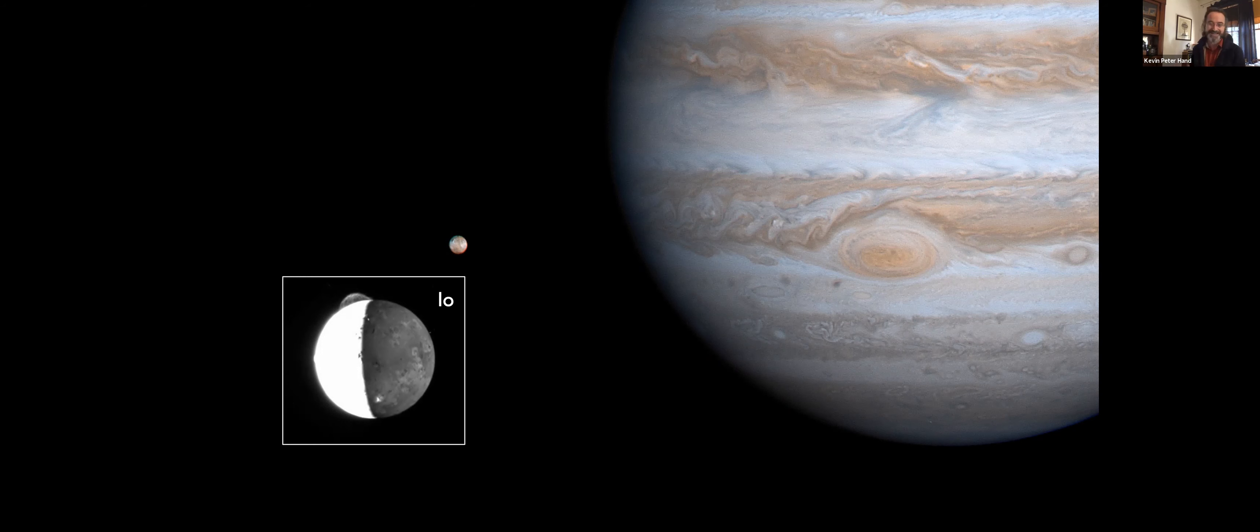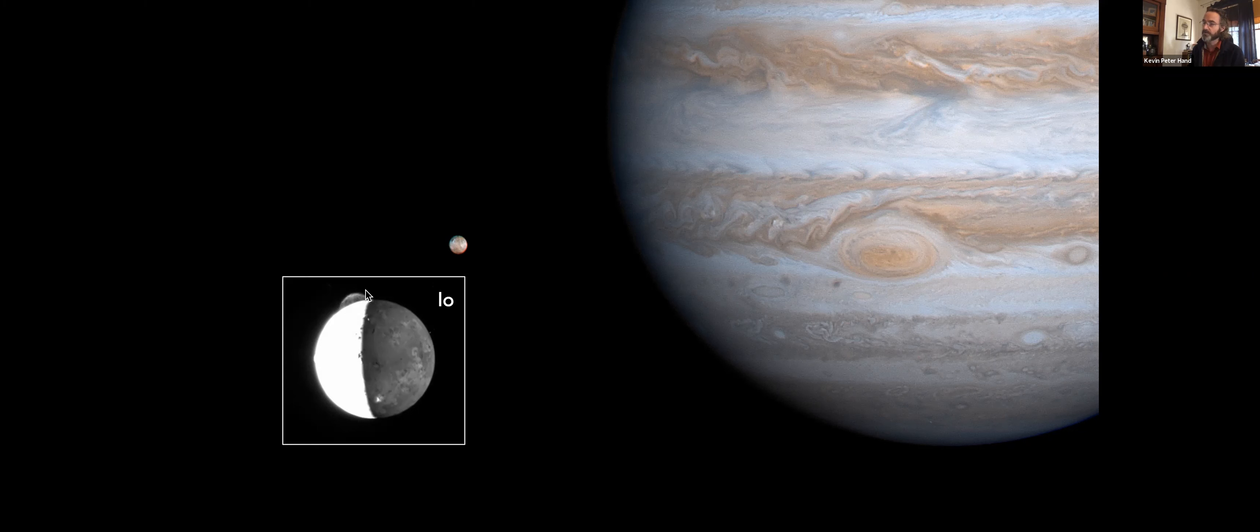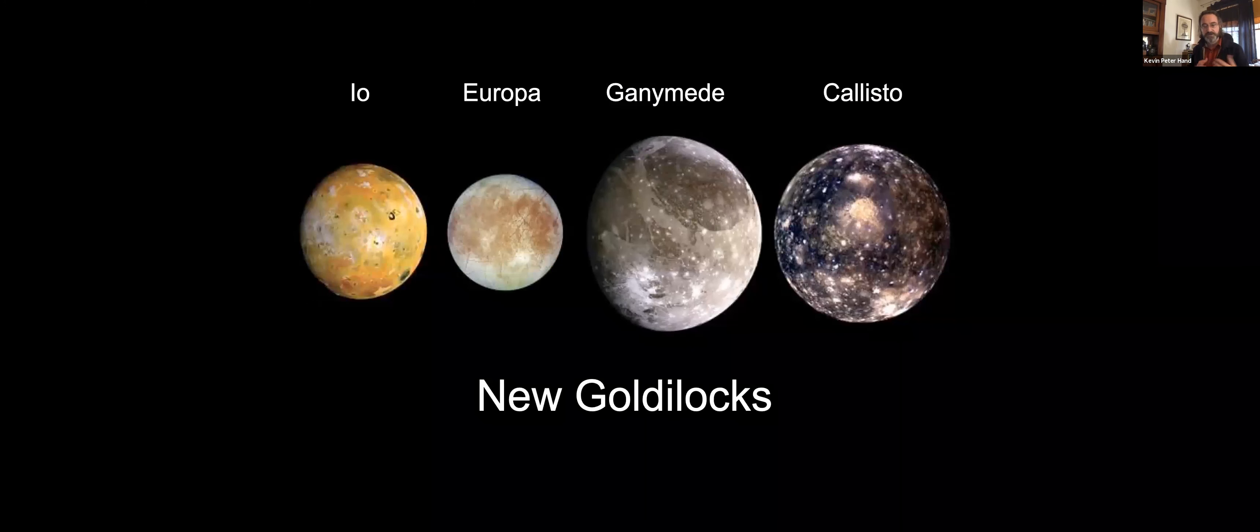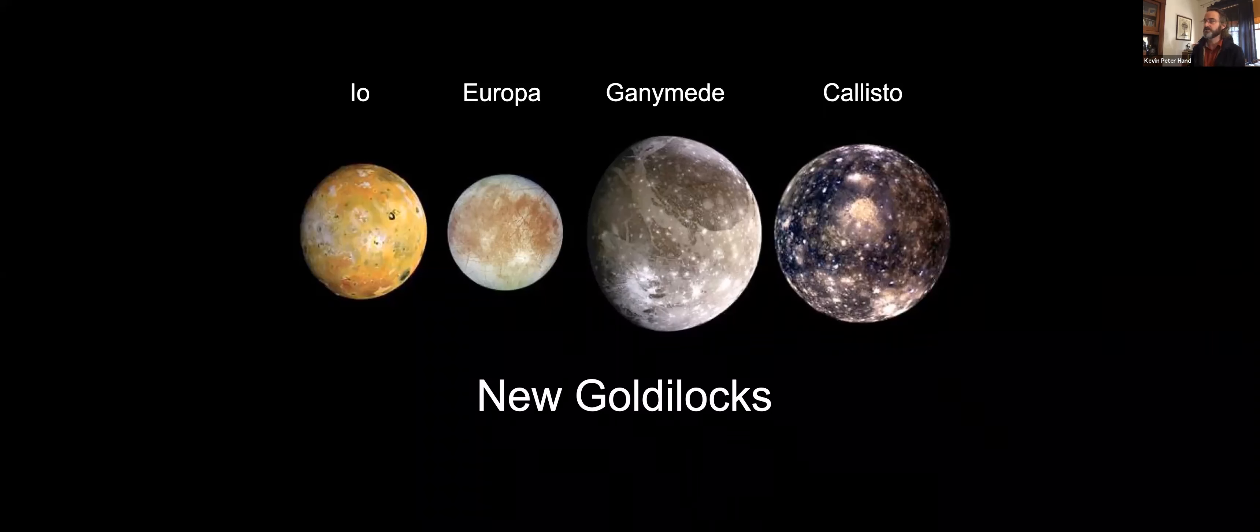Shown here is Io. Io is perhaps the most dramatic example of tidal energy dissipation. Io definitely does not have an ocean, but Io is the most volcanically active body in our solar system. Io is more volcanically active than the Earth. In this little inset, you can see a volcanic plume erupting near the north pole of Io. Chances are there's a volcanic eruption occurring on Io right now. In this sort of new Goldilocks scenario where tidal energy, the squeezing, tugging and mechanical energy that occurs as these moons trace out their slightly elliptical orbits around giant planets.